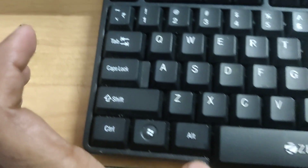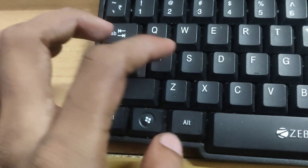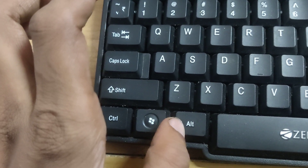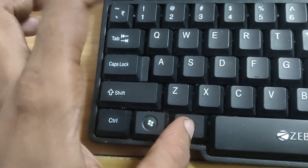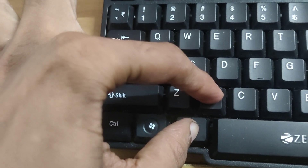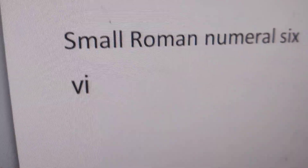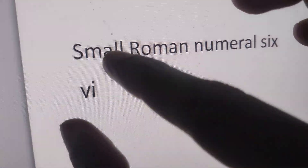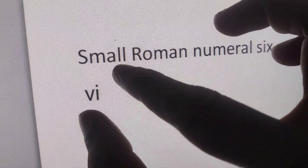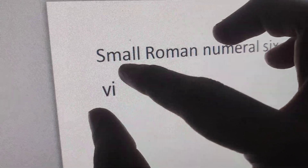Now on my keyboard, this is the ALT key and this is the S key. So I press one finger on the ALT key and another finger on the S key — these two keys at the same time. You can see that here it is changed to small format numeral 6.